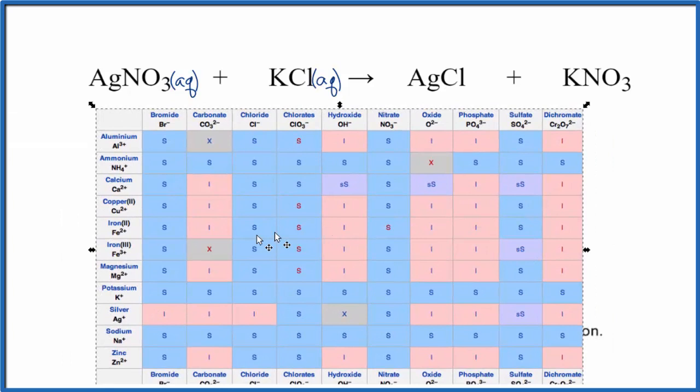And if we look at this, we can find silver right here. And we'll go across. We're looking for silver chloride. So the chlorides, they come down here. Here's silver chloride. We see this I here. It's insoluble. In fact, all of these chlorides, they're soluble. But silver chloride is insoluble. That means it won't dissolve in water.